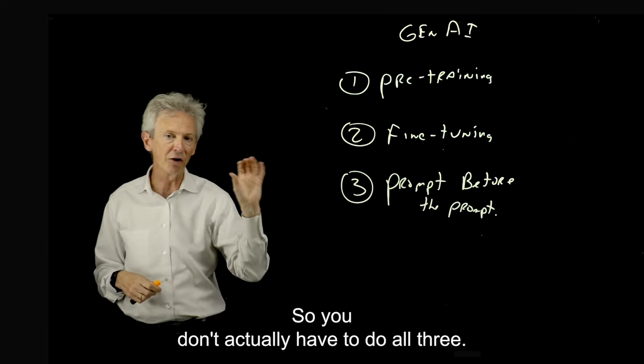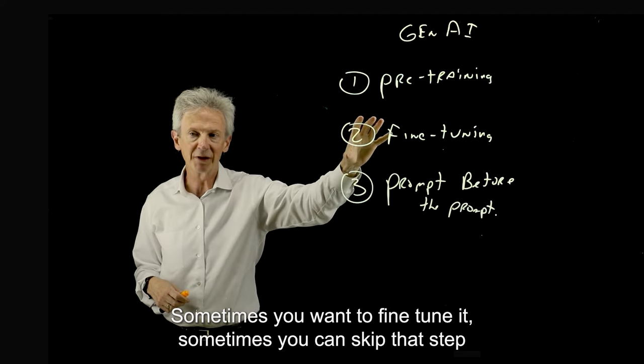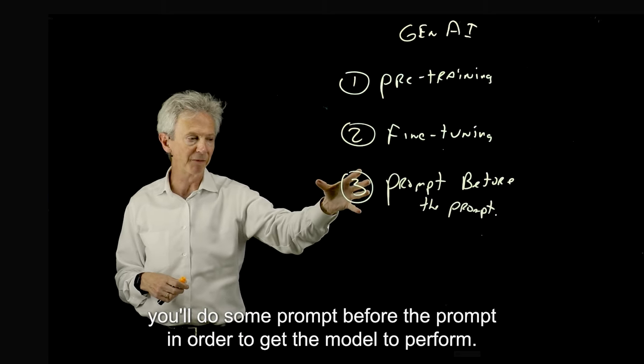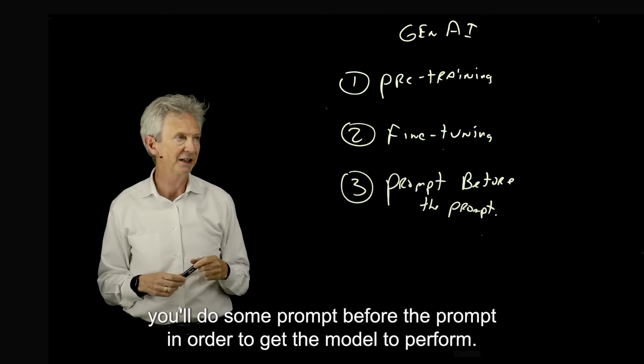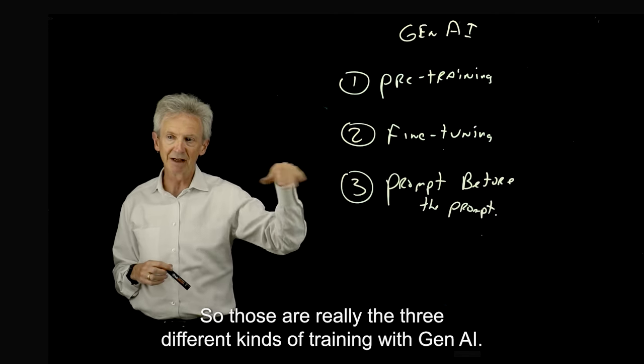You don't actually have to do all three. You'll always get a model that's pre-trained generally. Sometimes you want to fine-tune it, sometimes you can skip that step. And generally speaking, you'll do some prompt before the prompt in order to get the model to perform. Those are really the three different kinds of training with Gen AI.